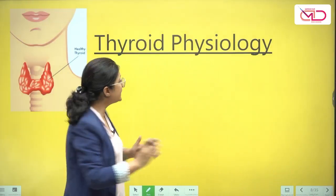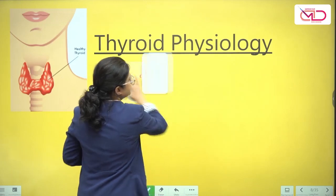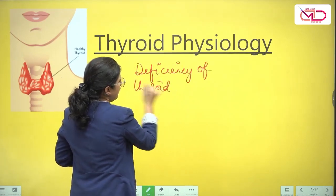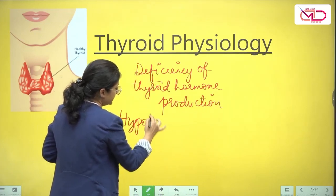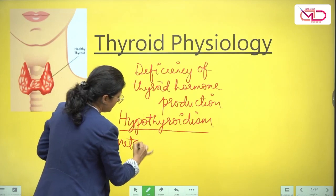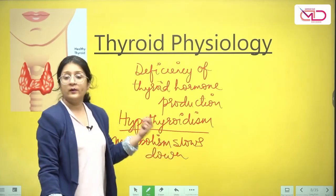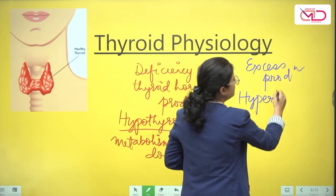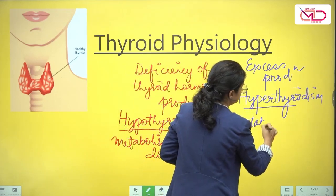Let's establish something very basic. When there is a deficiency of thyroid hormone production from the thyroid gland, we call it hypothyroidism, and with hypothyroidism metabolism slows down. On the other hand, when there is excess production of thyroid hormones, we call it hyperthyroidism, and when that happens metabolism increases.